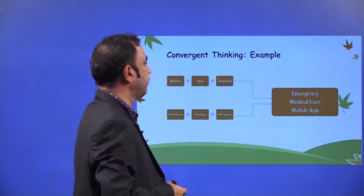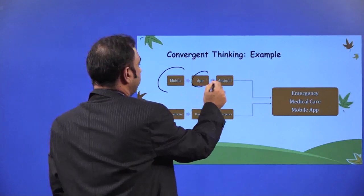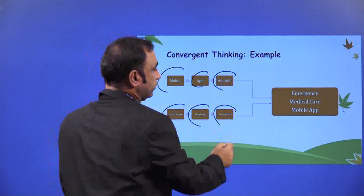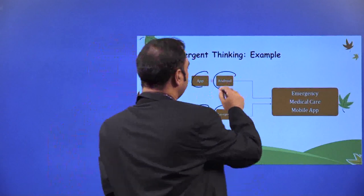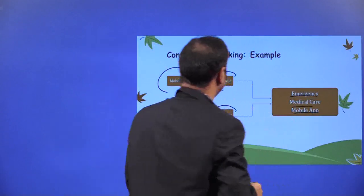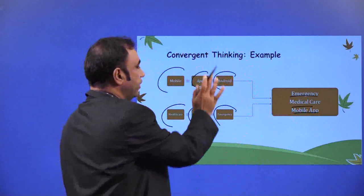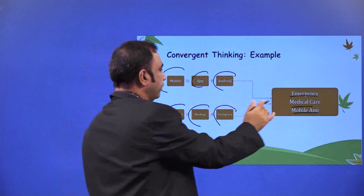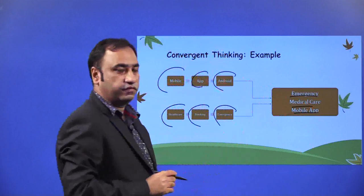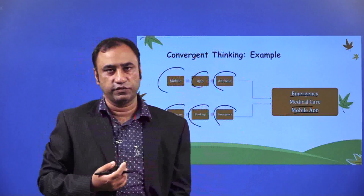Convergent thinking example. We need to develop a mobile app, Android based, healthcare, booking, emergency — all those things converge into an emergency medical care mobile app. So these are the things which are required for the product that converges into an emergency medical care mobile app. This is a very simple way of illustration.